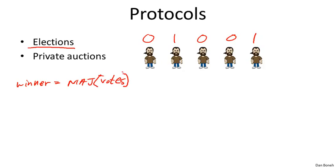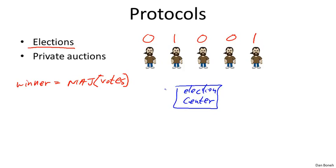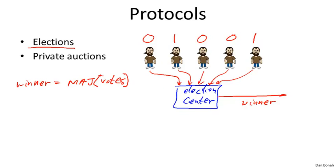To solve this, we introduce an election center that helps compute the majority while keeping the votes secret. The parties each send a specially encrypted version of their votes to the election center, such that at the end of the election, the center is able to compute and output the winner. However, other than the winner of the election, nothing else is revealed about the individual votes — they remain completely private.